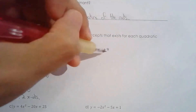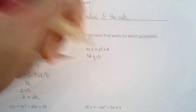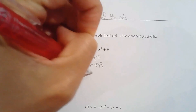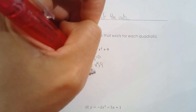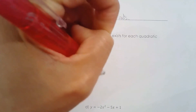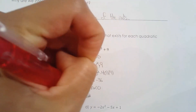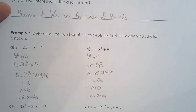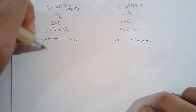For x squared plus 9: based on transformations I can tell right away there are no x-intercepts, but let's verify with the discriminant. Here b is zero, so zero squared minus 4ac gives negative 36. Since the discriminant is negative, there are no x-intercepts — which matches what we already knew from the graph of y equals x squared plus 9.